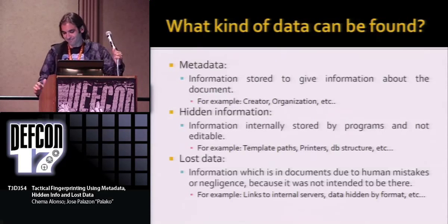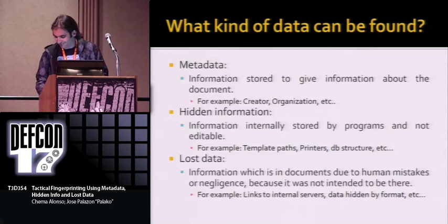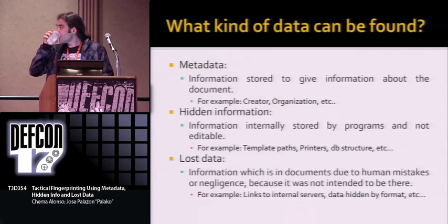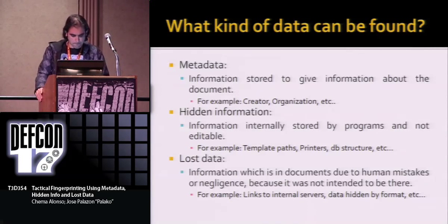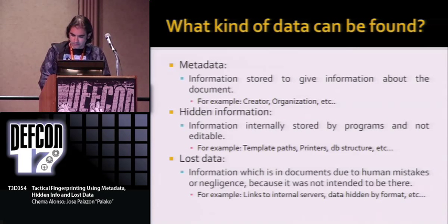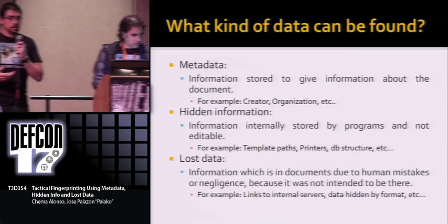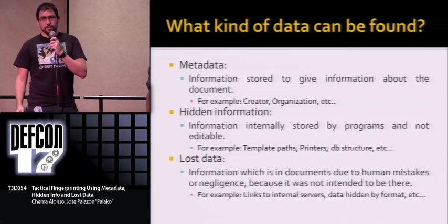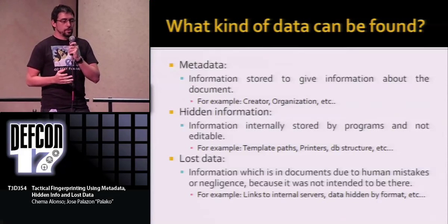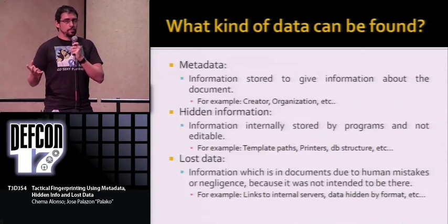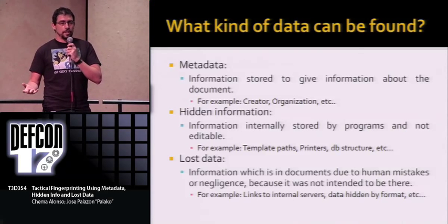So far everybody that has been talking about metadata has been talking about the kind of data that you can usually access via the properties dialogue — who created the document, which company the document is for. But we want to talk about more information that is there and should definitely not be there when you're publishing the document. We call some of this information 'hidden information' — it's a kind of metadata that you cannot actually edit.